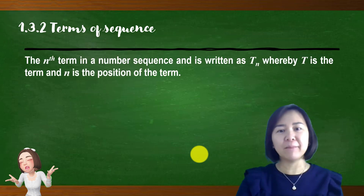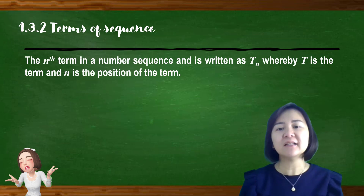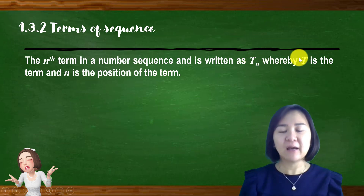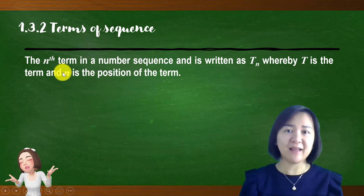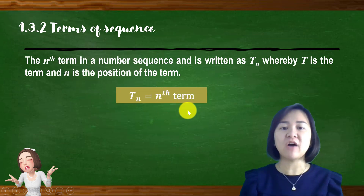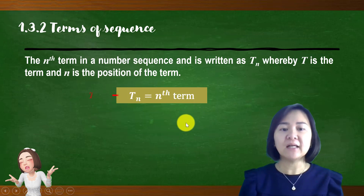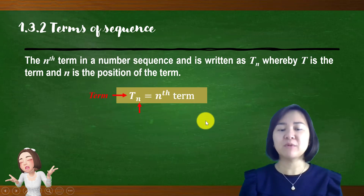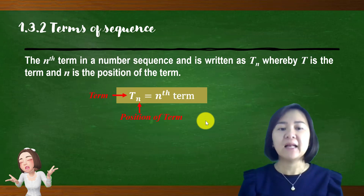The term in a number sequence is written as T_n. The capital T is the term and the small letter n is the position of the n-th term. Let's see an example.